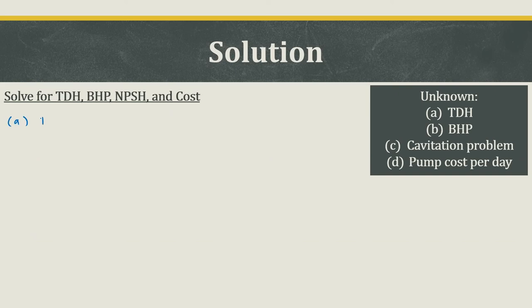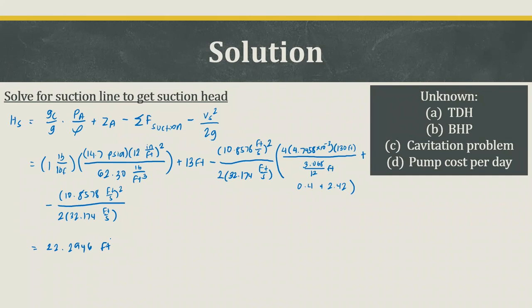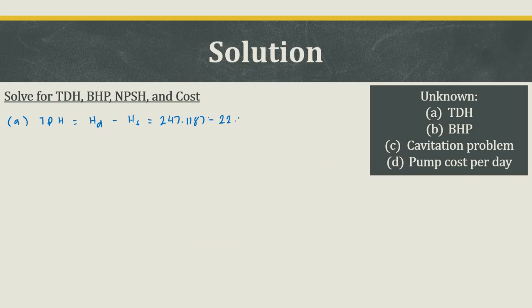For letter A, the total discharge head is the difference between the discharge head and the suction head: 247.1187 minus 22.2946 feet, giving a total dynamic head of 224.8241 feet.